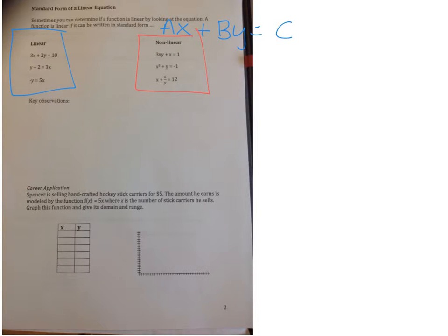These are not linear. We have 3xy plus x equals 1, x cubed plus y equals negative 1, and x plus 6 divided by y equals 12. Jot down some key observations that you've noticed that makes the box on the left, which I did in blue, linear, and the box on the right nonlinear.